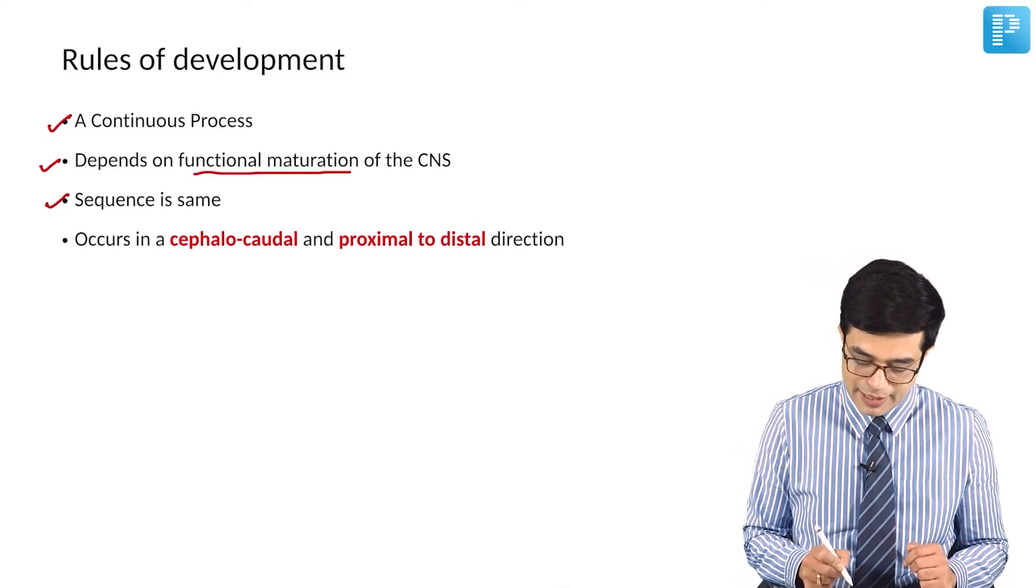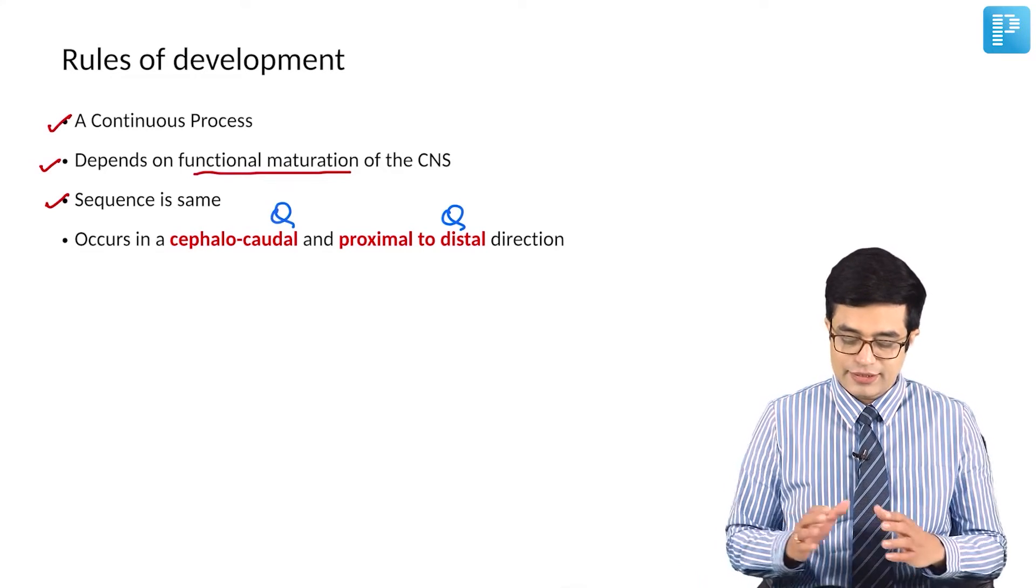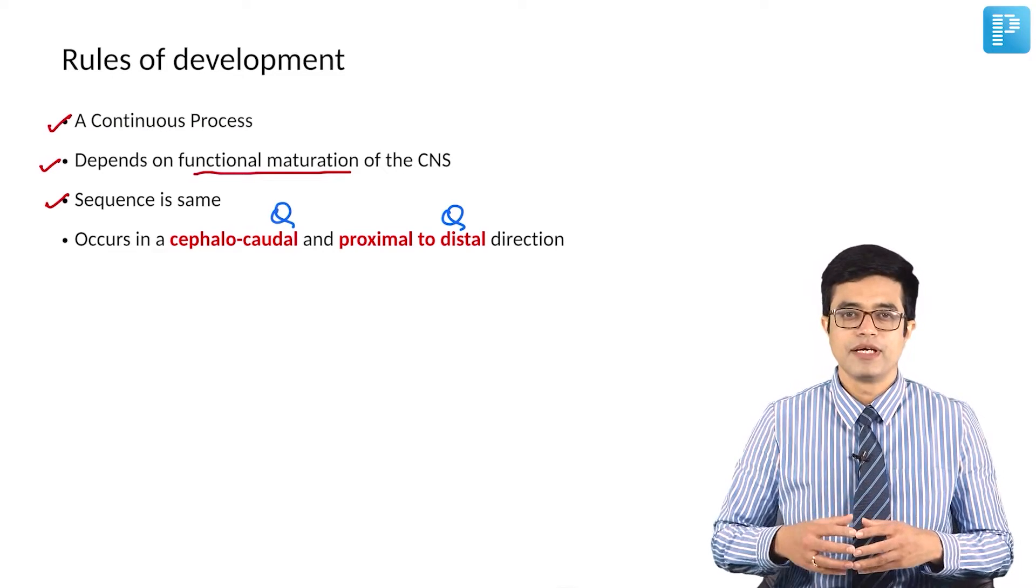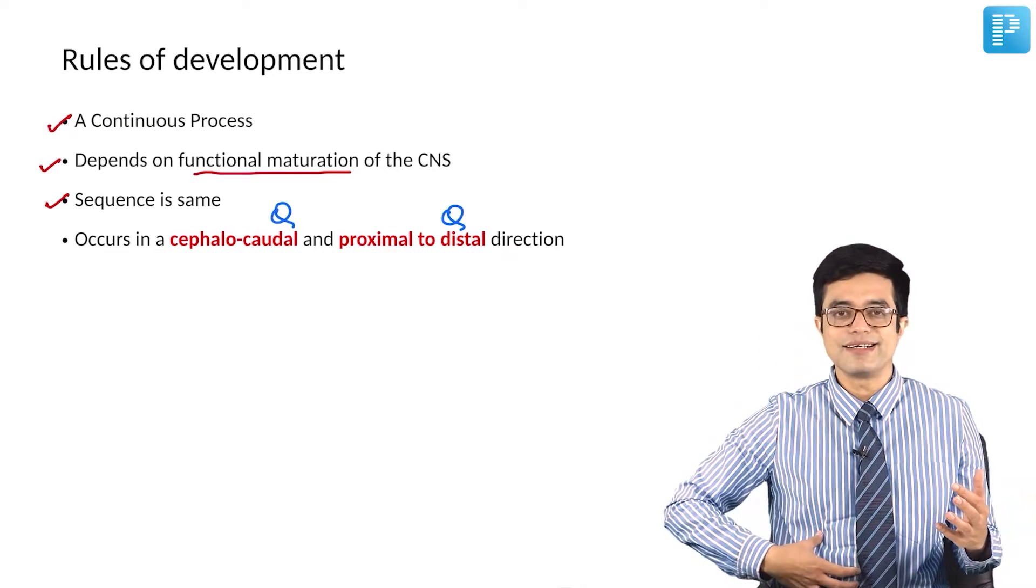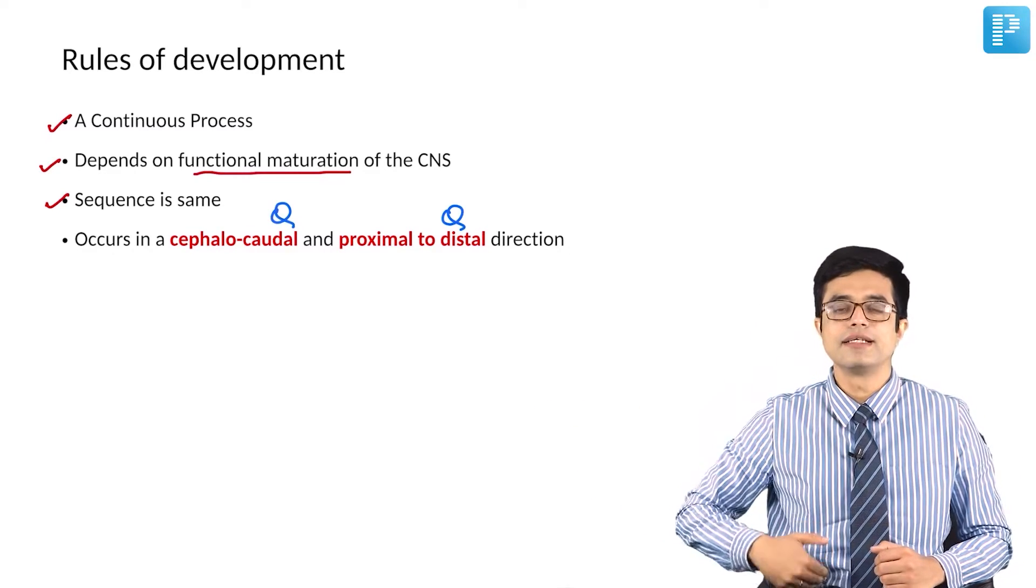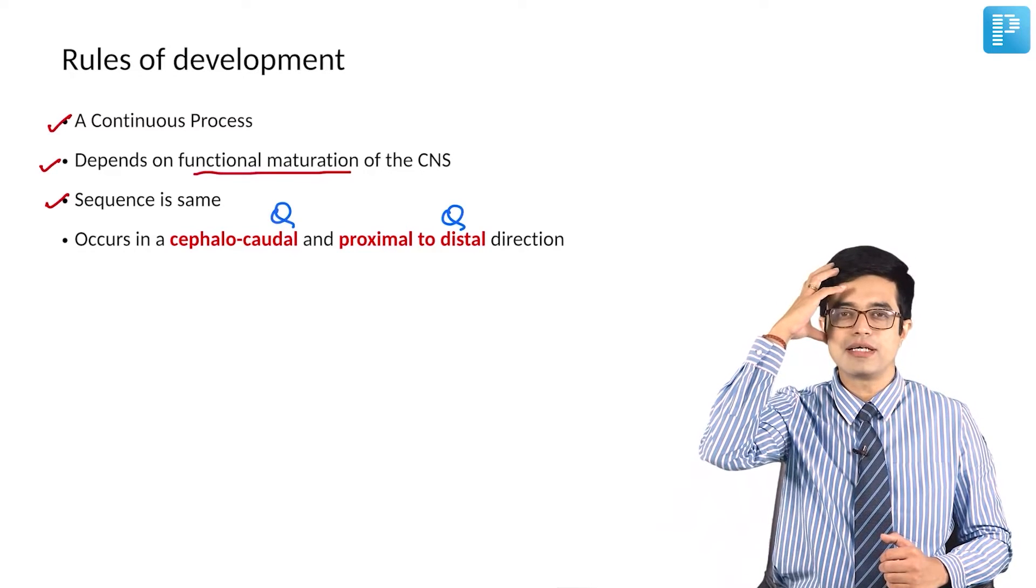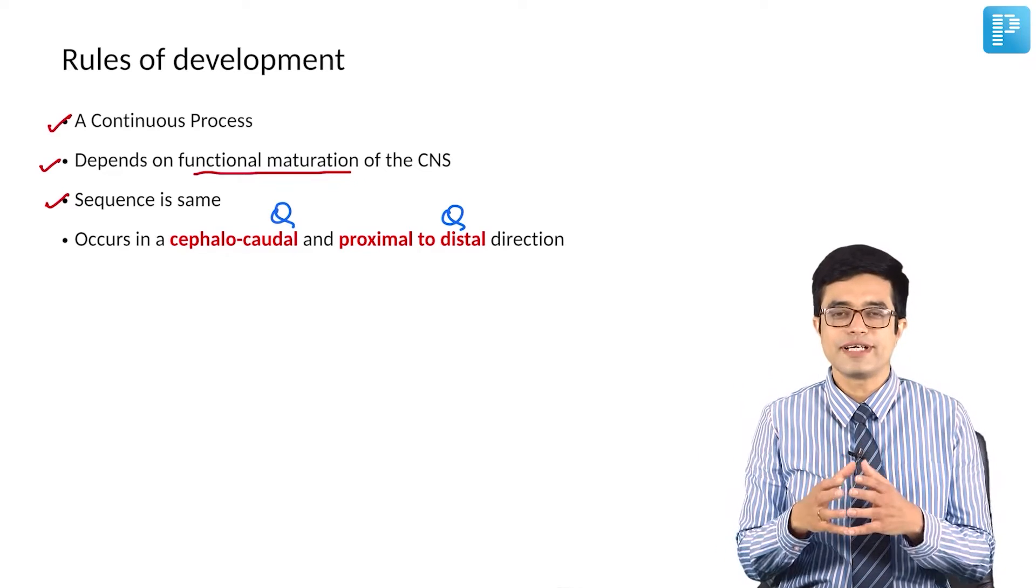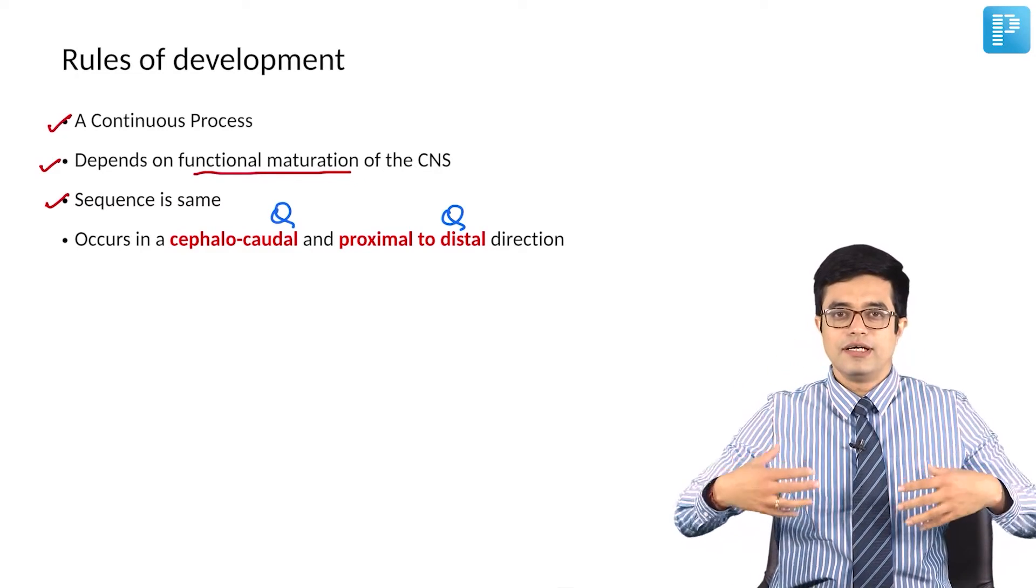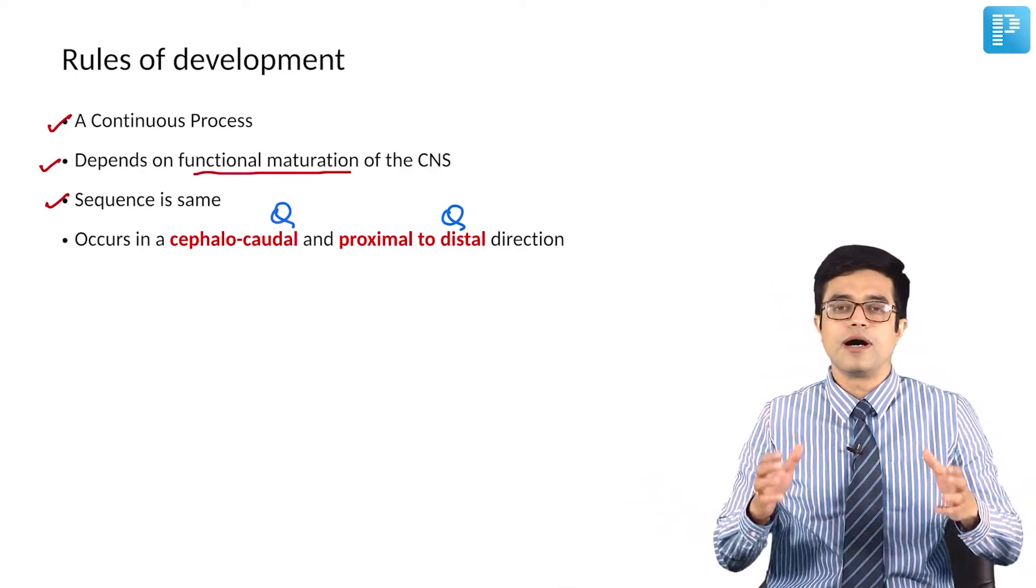Fourth, this is very important and potential MCQs can be asked on this. The development occurs in a cephalocaudal and proximal to distal direction. What does it mean? There are two parts of a body: there is a central axis and there are the limbs. In the central axis, the development attainment first occurs in the upper part and then comes the lower part. For example, head or neck control comes first, things related to trunk development or turning over come later.